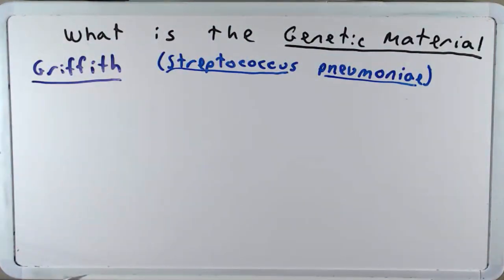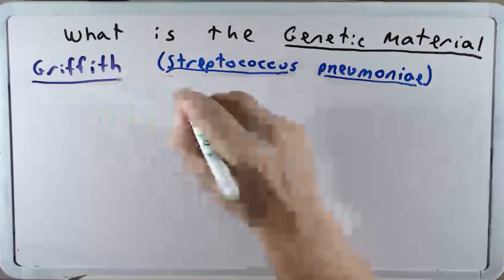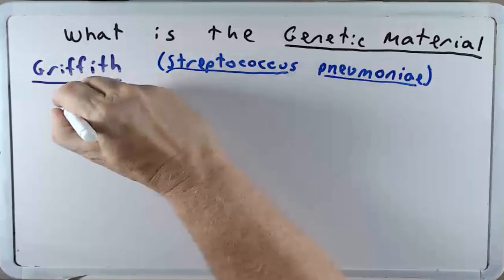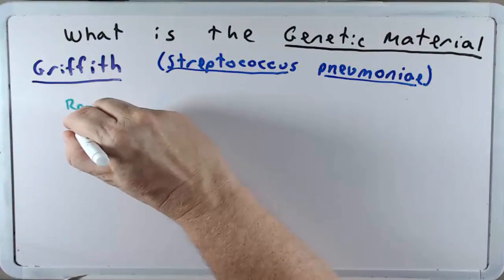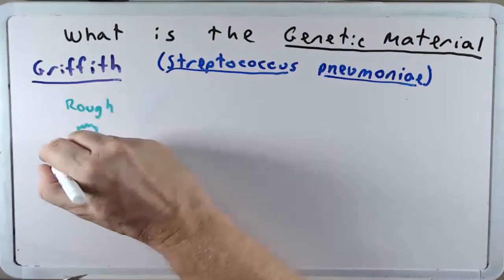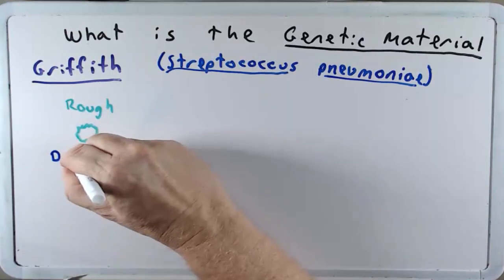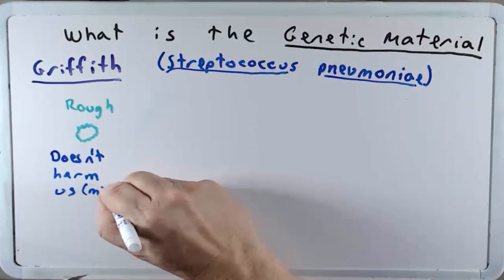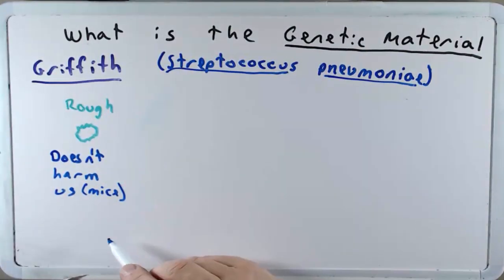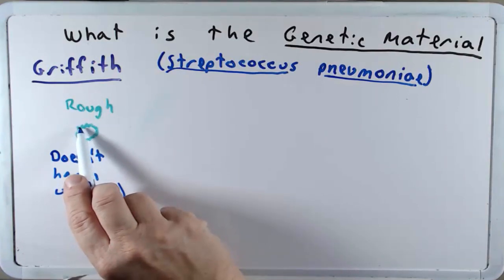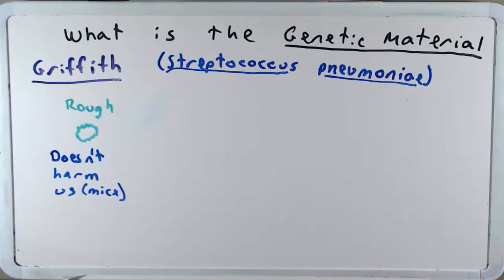So let's talk about his experiments. First let's recognize that there were two different forms of this bacterium. The first one we're just going to call rough. And it's rough because it has a rough outer structure to the bacterium. This bacterium doesn't harm us. And the reason for that is because our immune system could attach to the rough structure of this bacterium and kill it through proper immune activity.